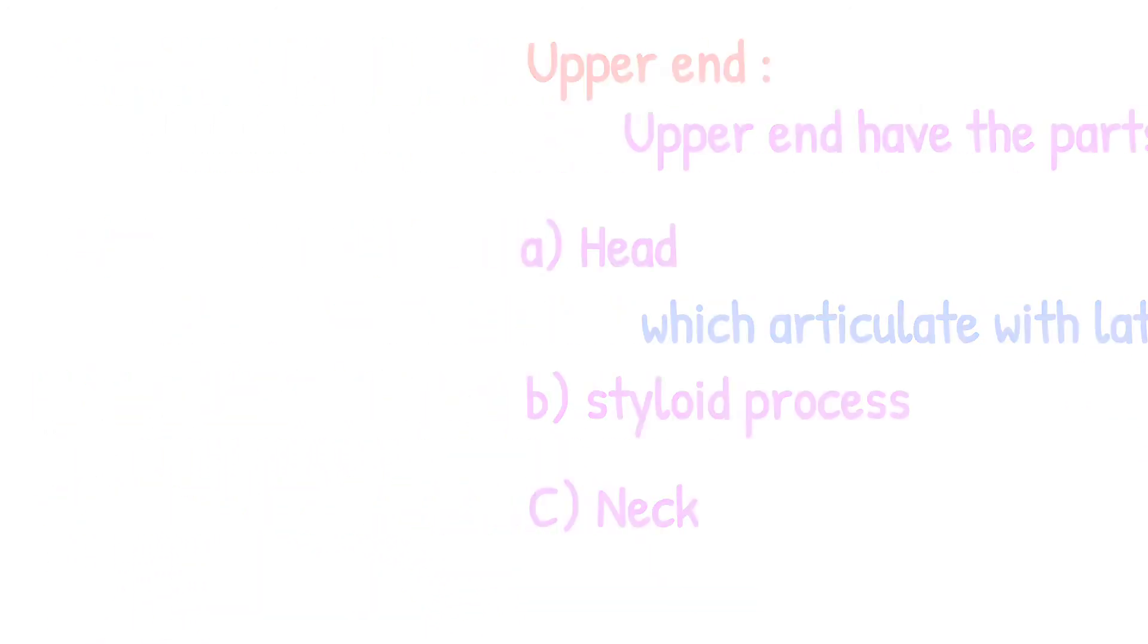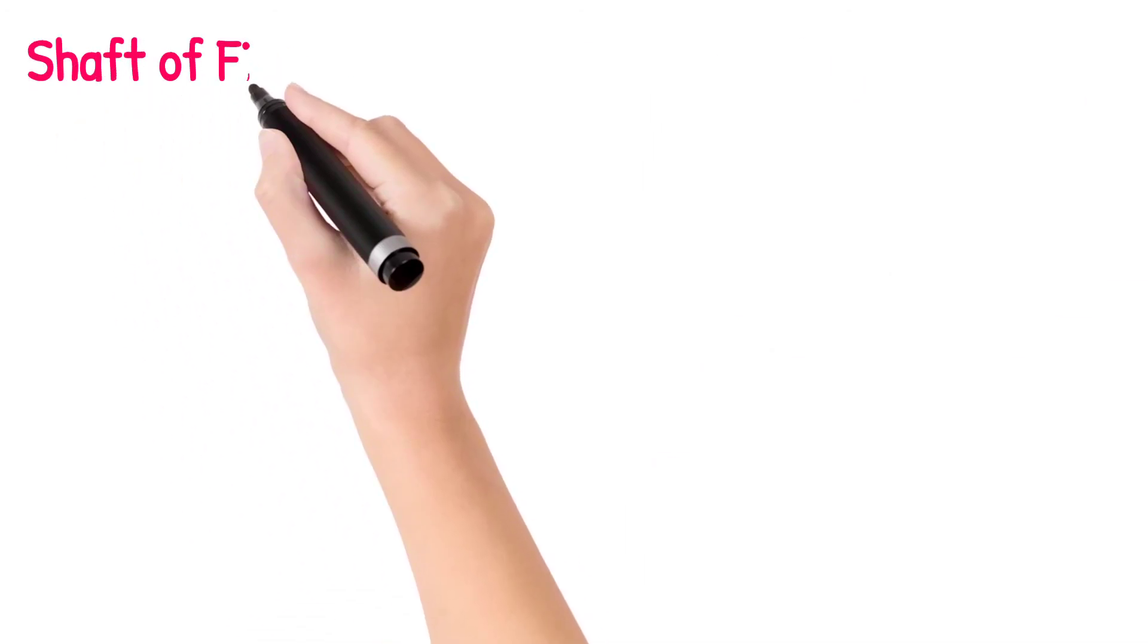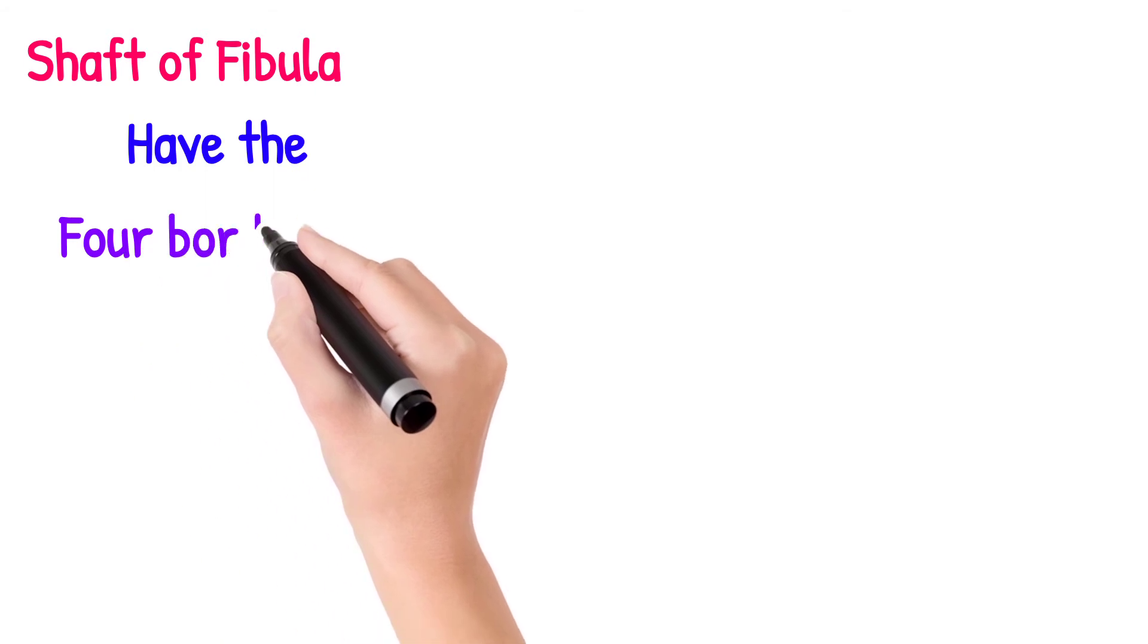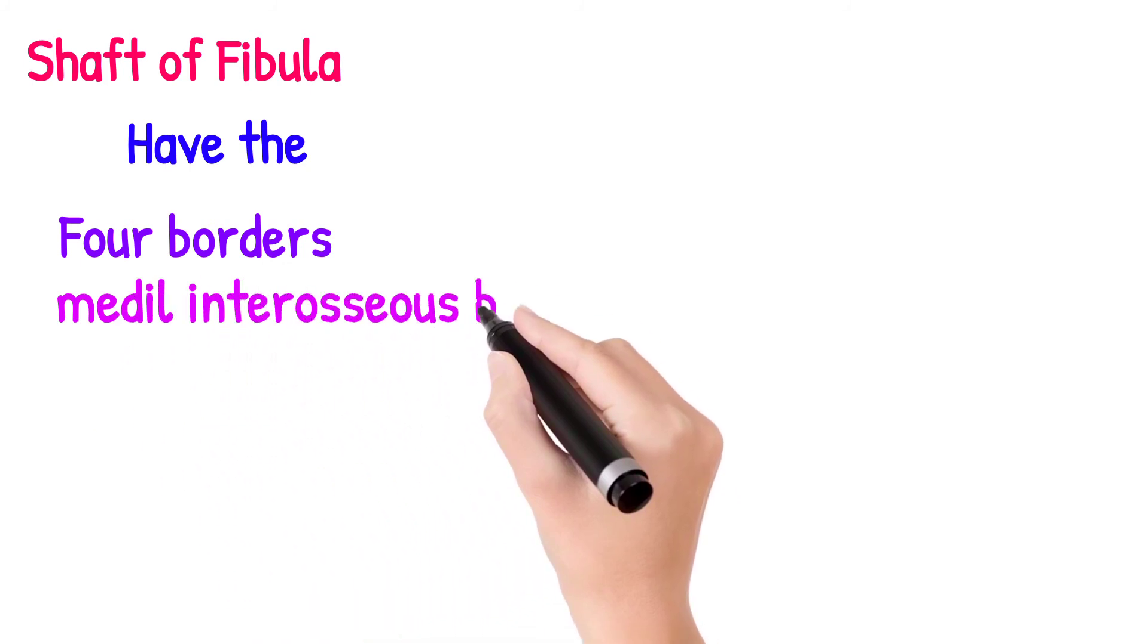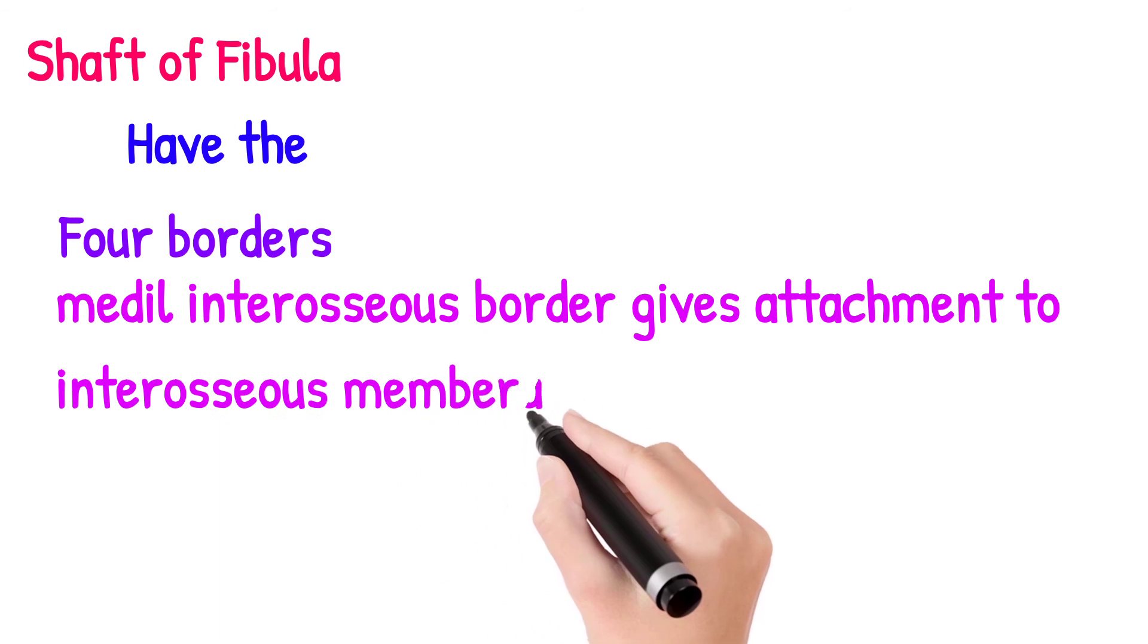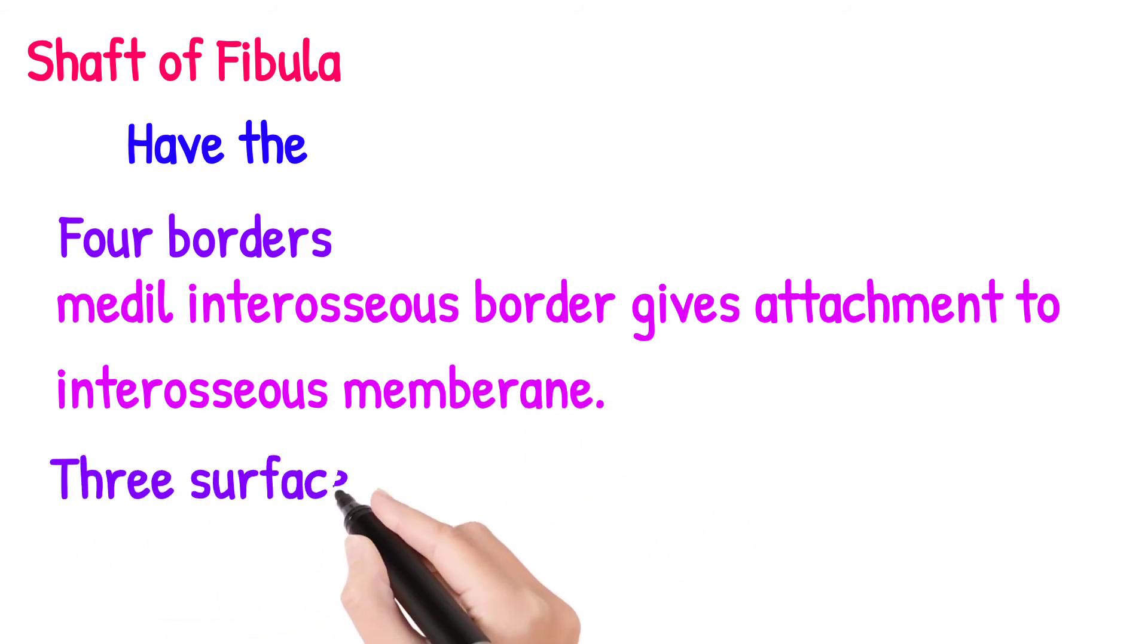Now we come toward the shaft of fibula. The shaft of fibula has four borders: anterior lateral, anterior medial, posterior lateral, and posterior medial borders. The medial interosseous border gives attachment to the interosseous membrane and has three surfaces: lateral surface, medial, and posterior surface.